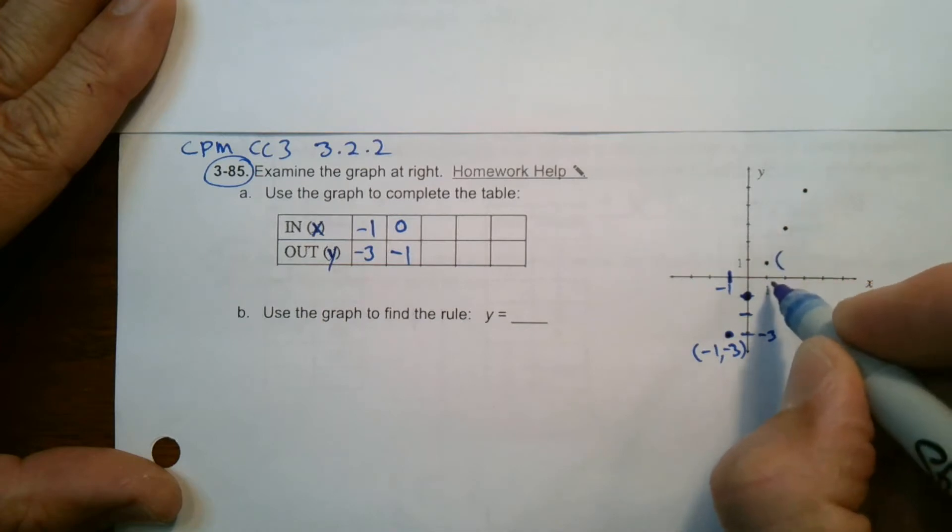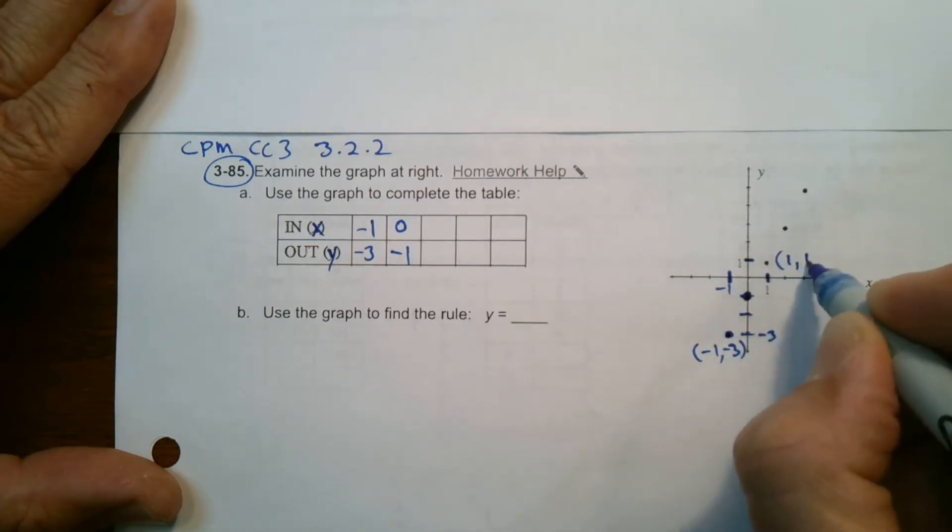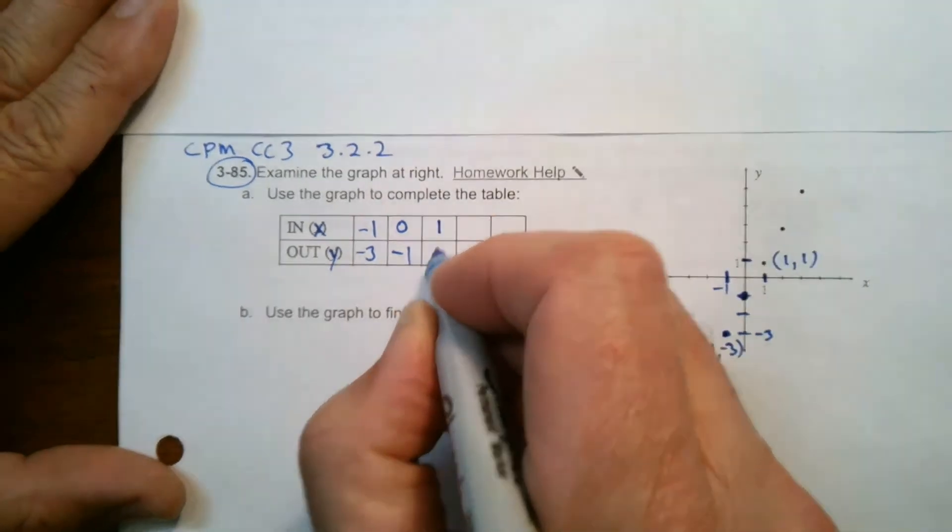And I keep going. Where is this one? Well, this one, X is at 1, Y is at 1. That's the point 1, 1. So X is 1, Y is 1.